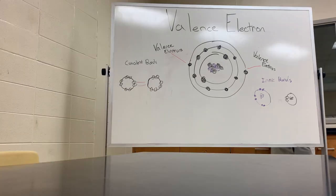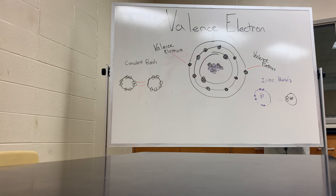On the other hand, you have ionic bonds — they can't share electrons, but electrons can be transferred from one atom to another to create a full valence shell.